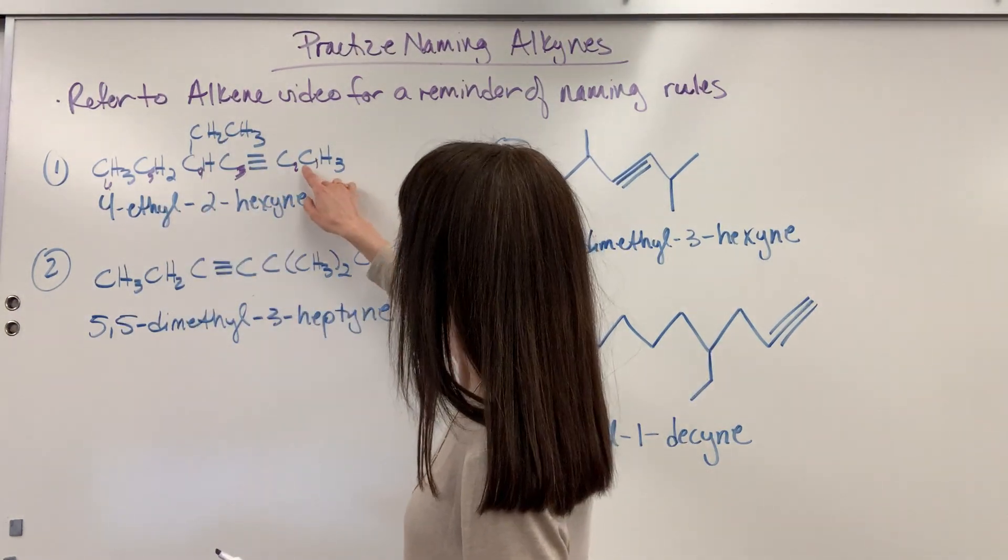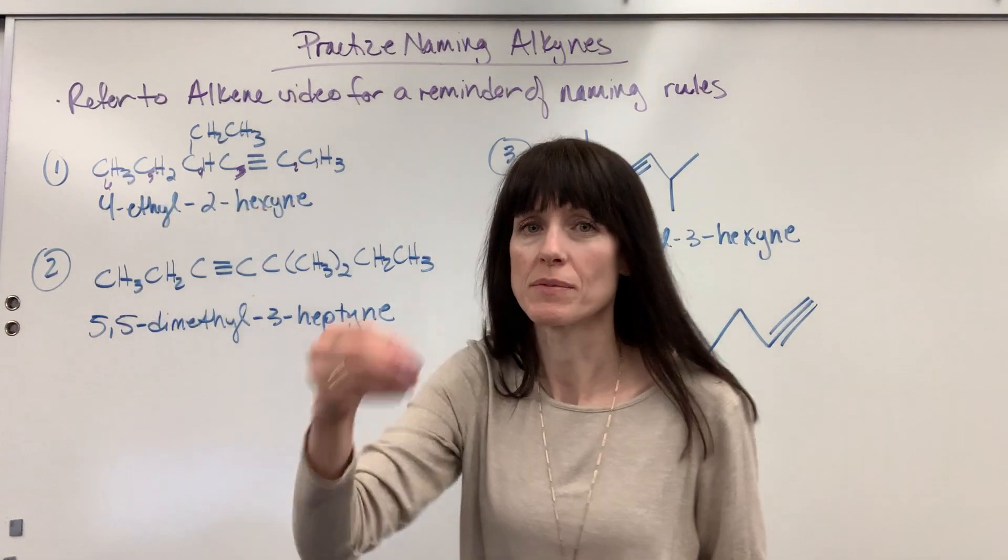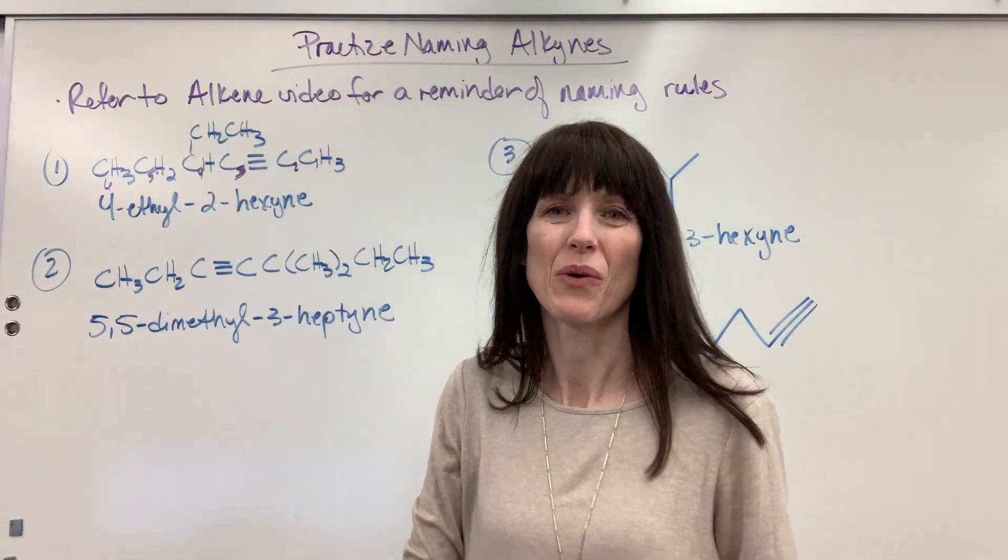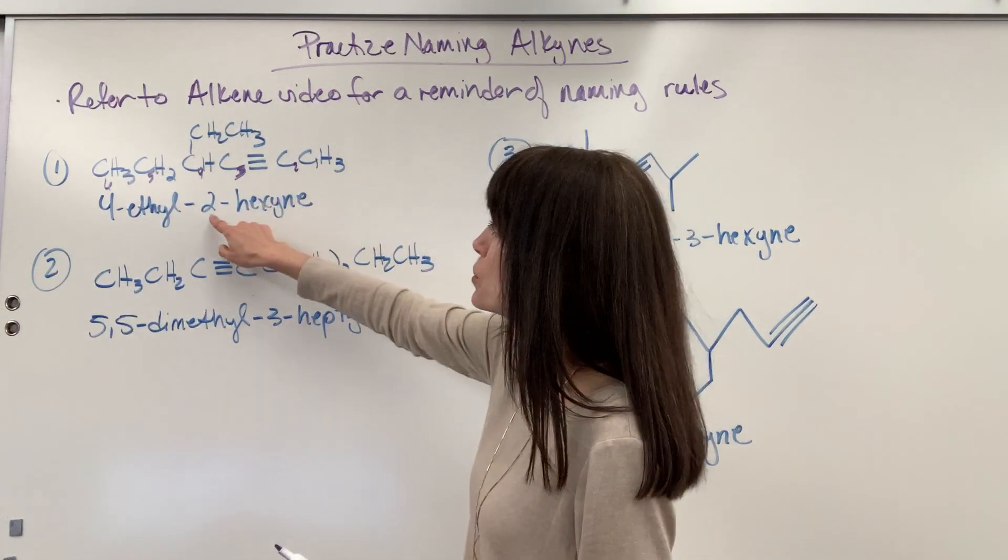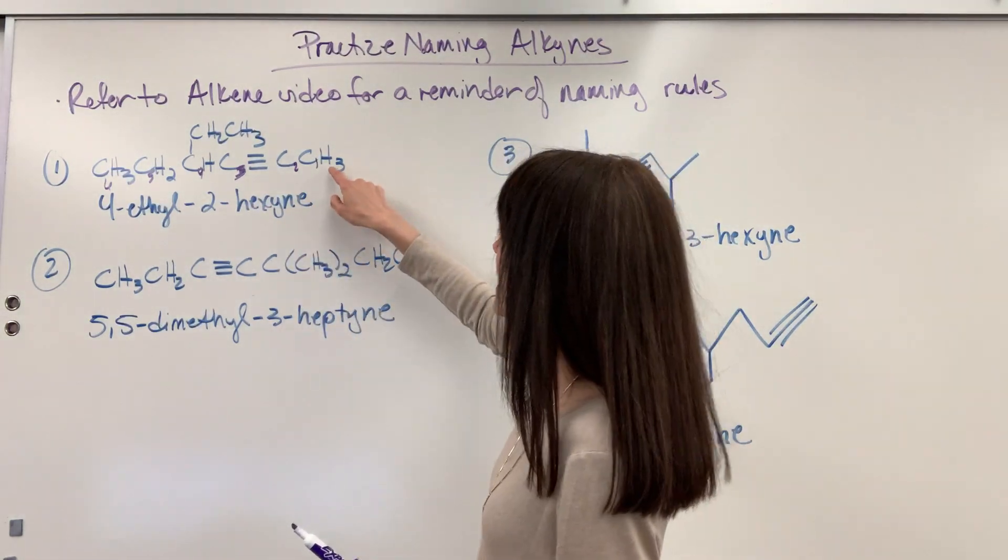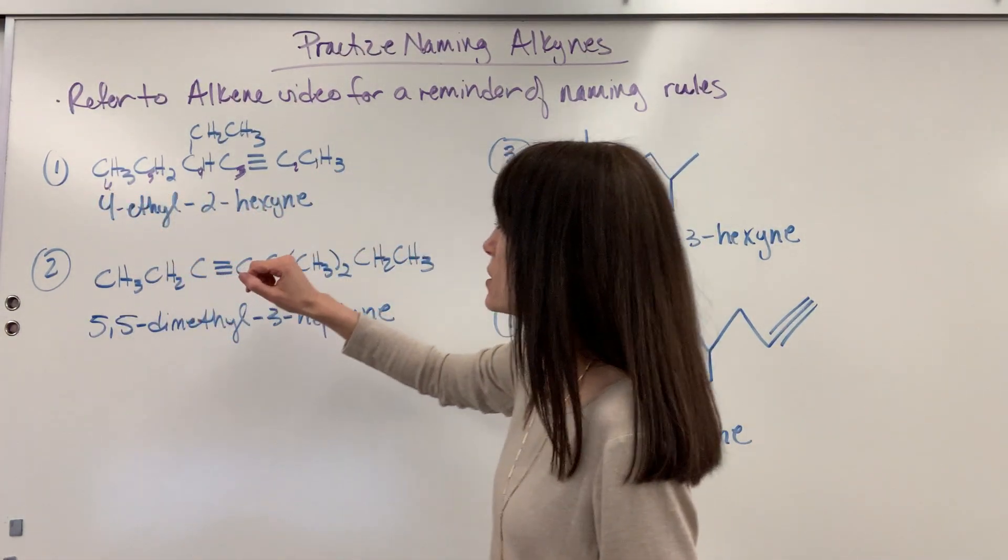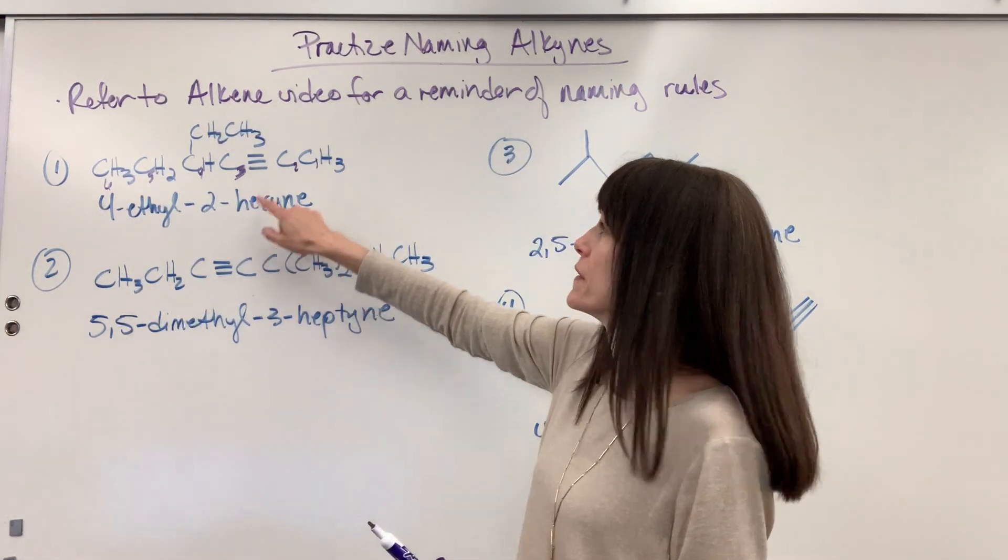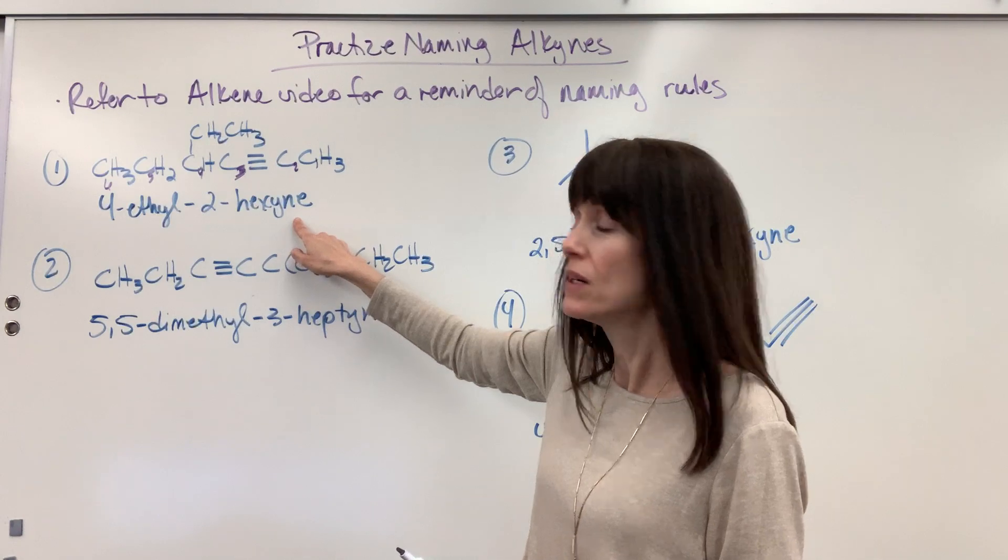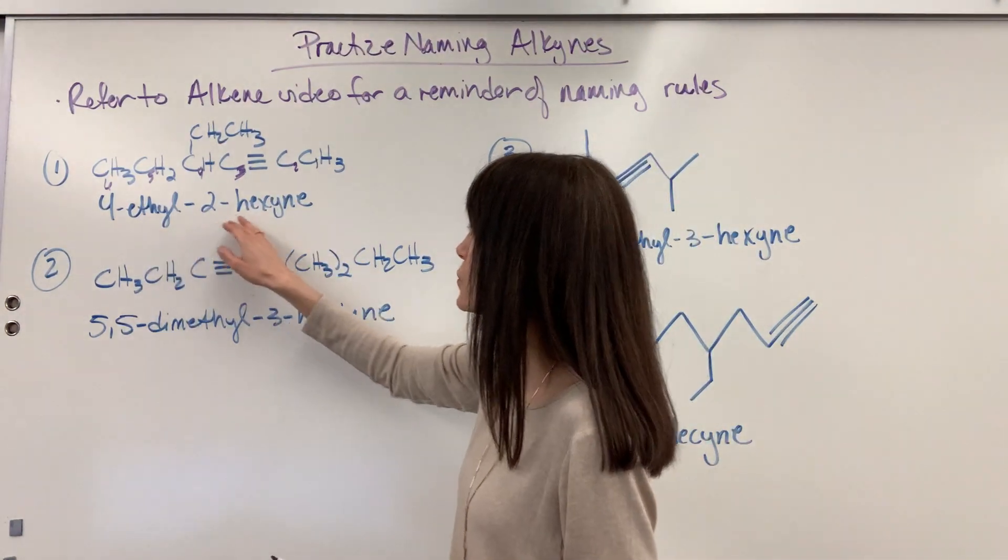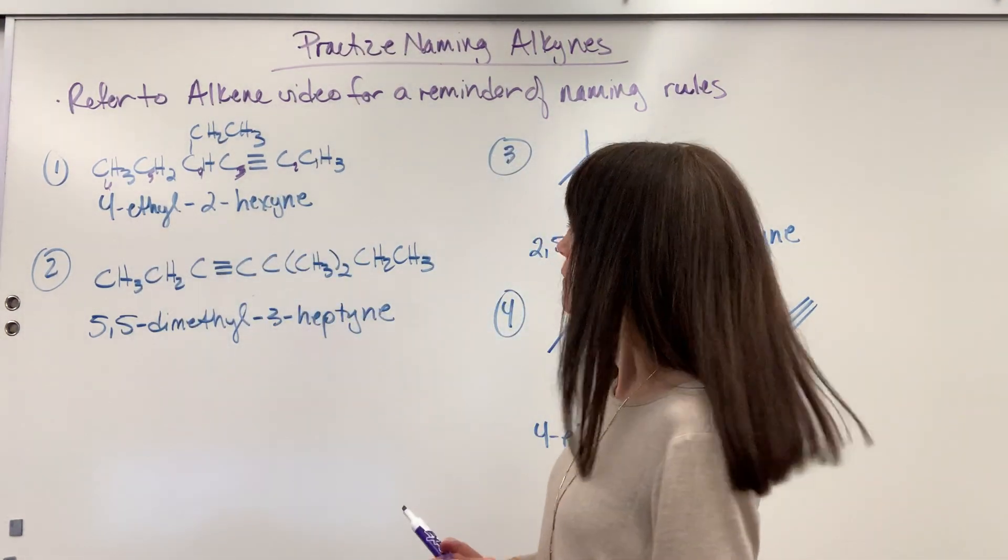And then on the second carbon, that's the first carbon to touch that multiple bond. You always write the carbon that very first touches the multiple bond. So two, and then I had six carbons in this long parent chain, hex. The triple bond gives the ending the y-n-e, ine. Let's say that one more time. 4-ethyl-2-hexine. Very good!